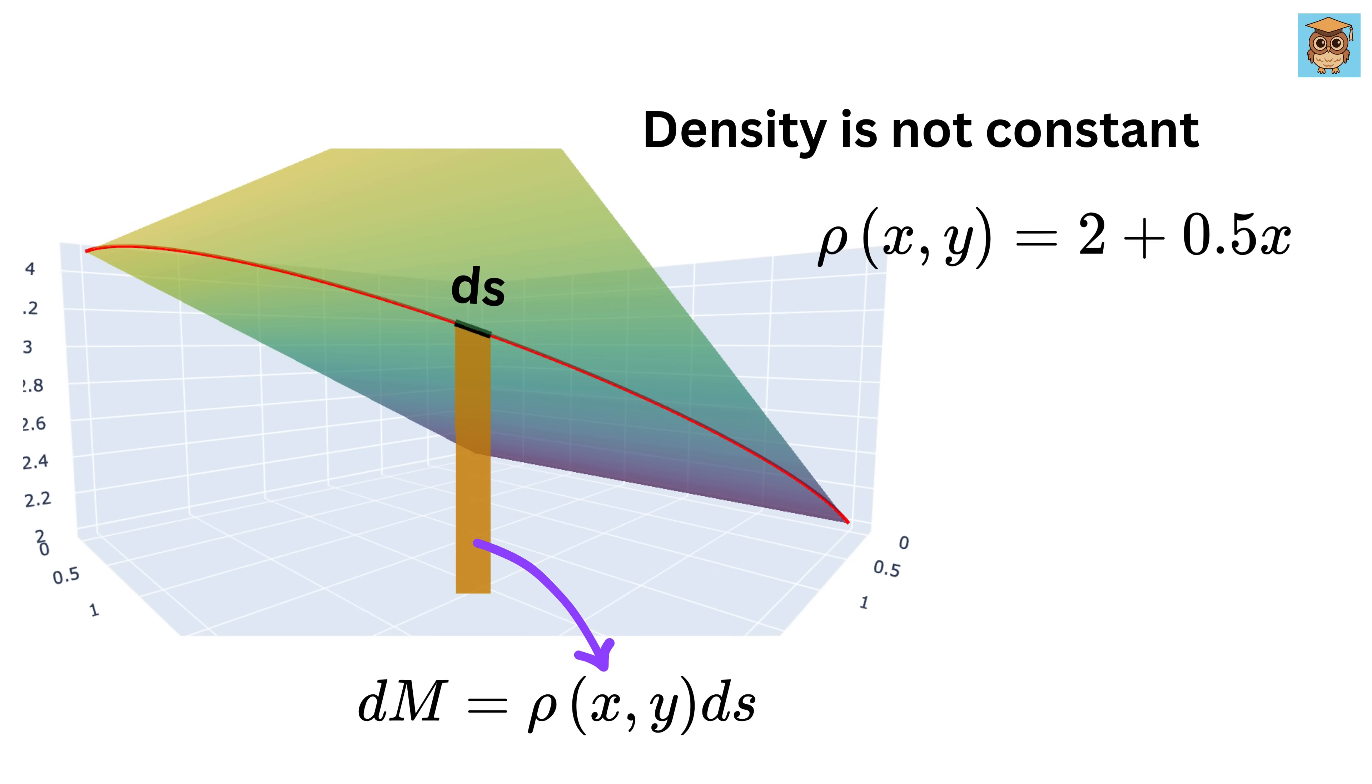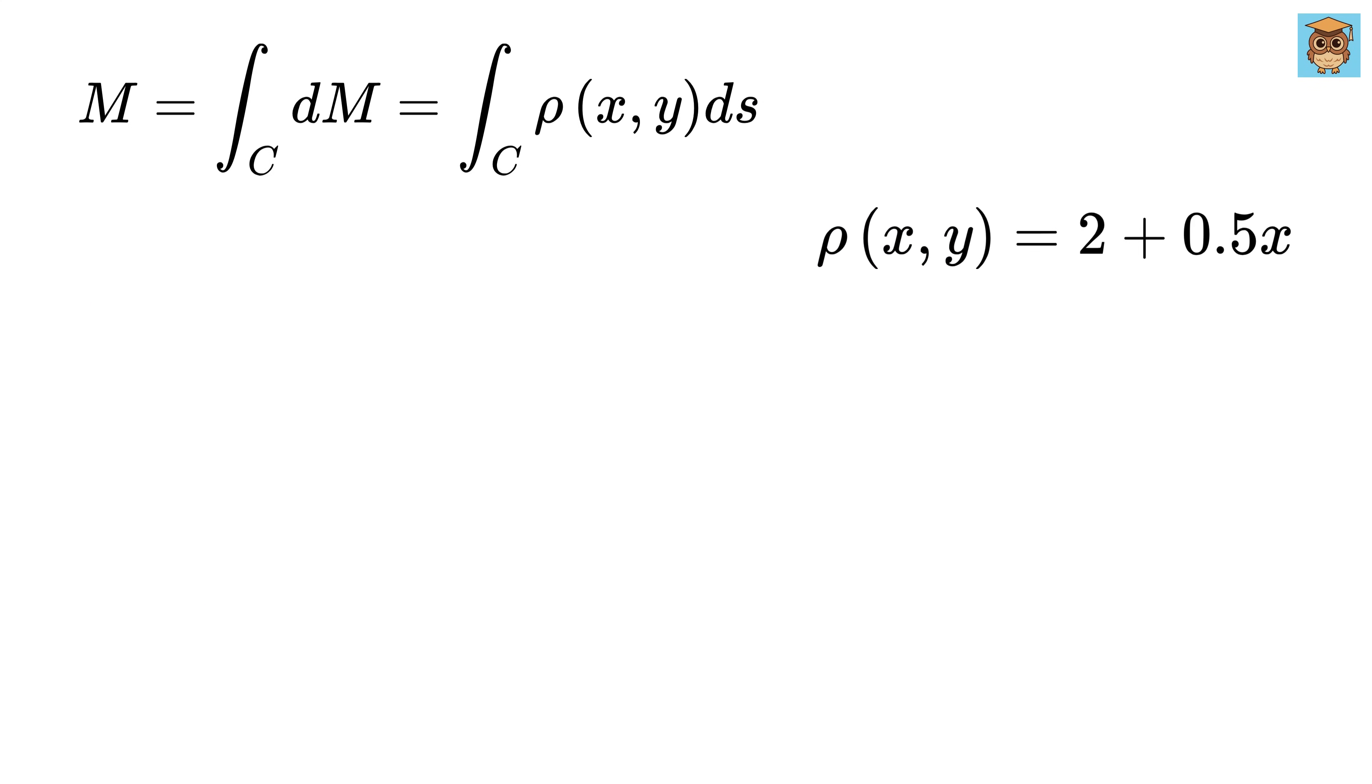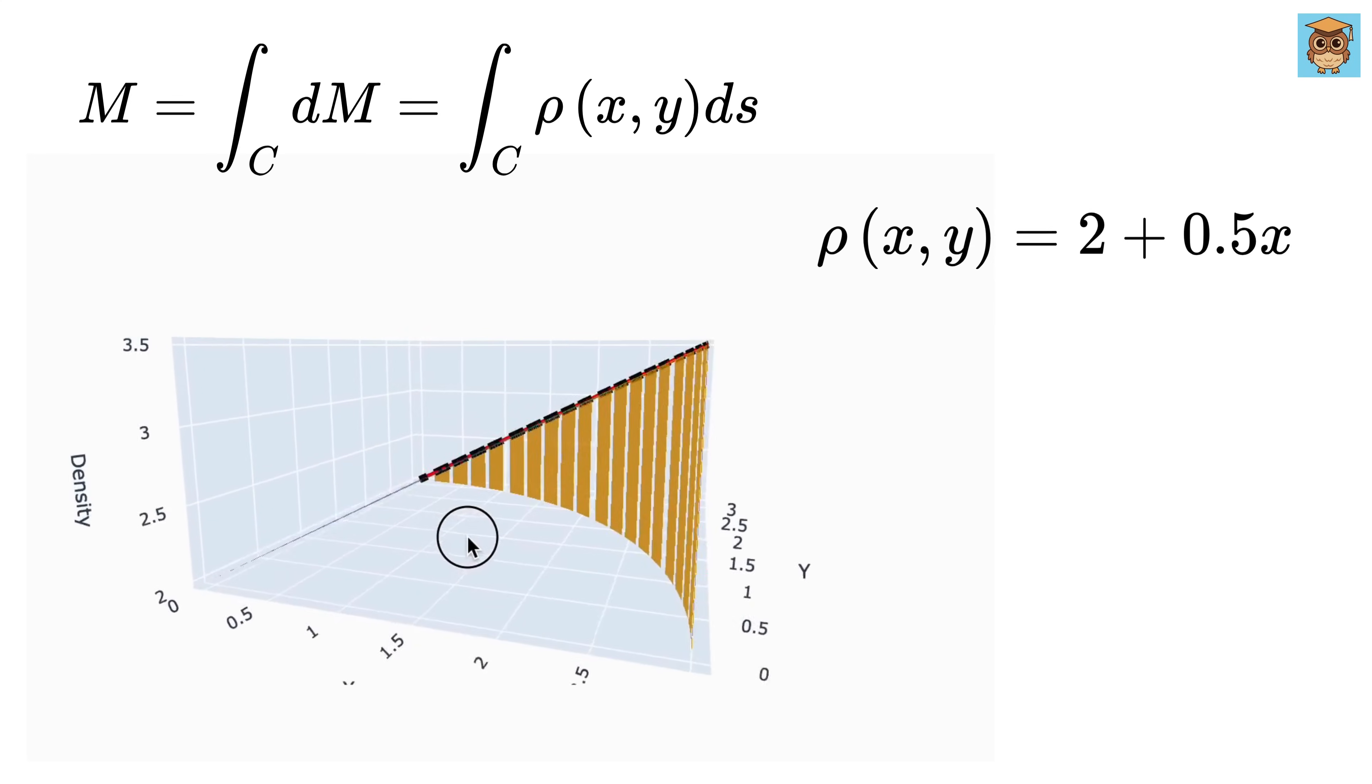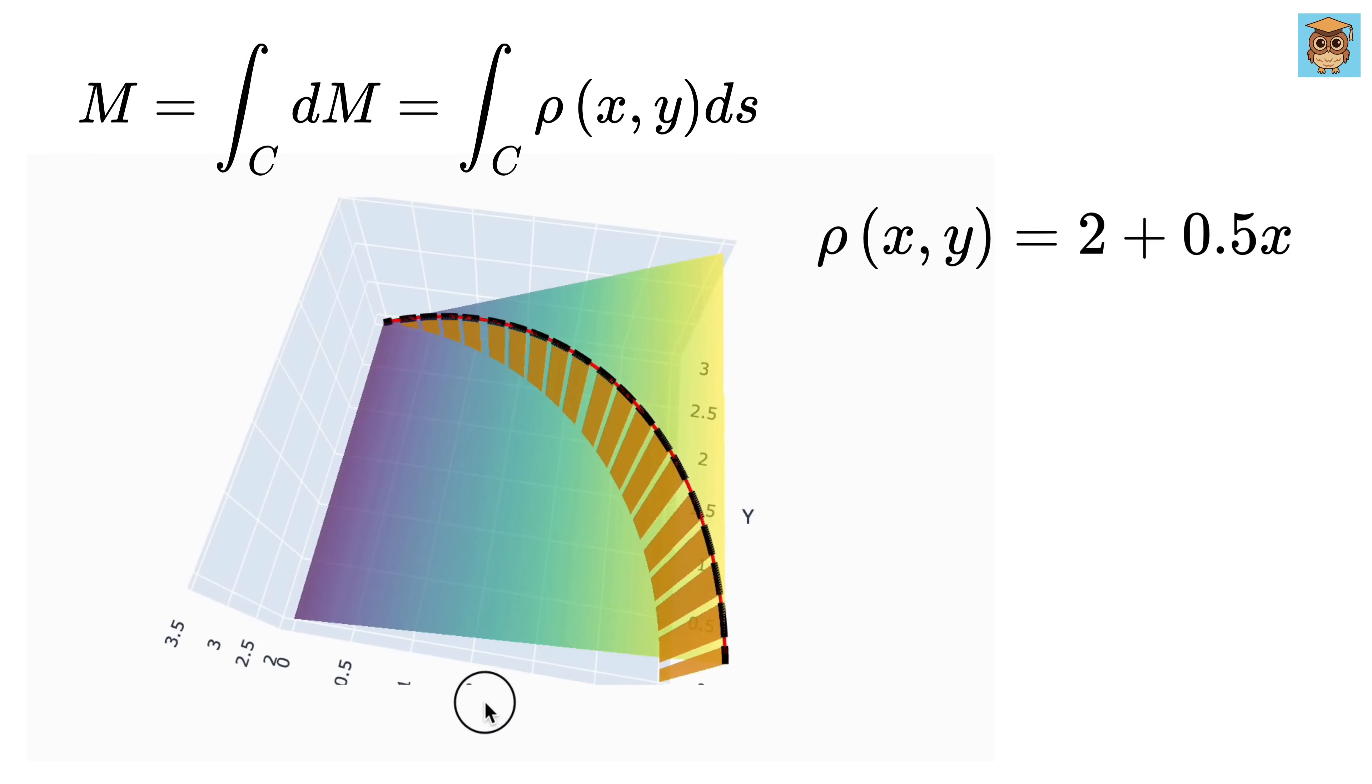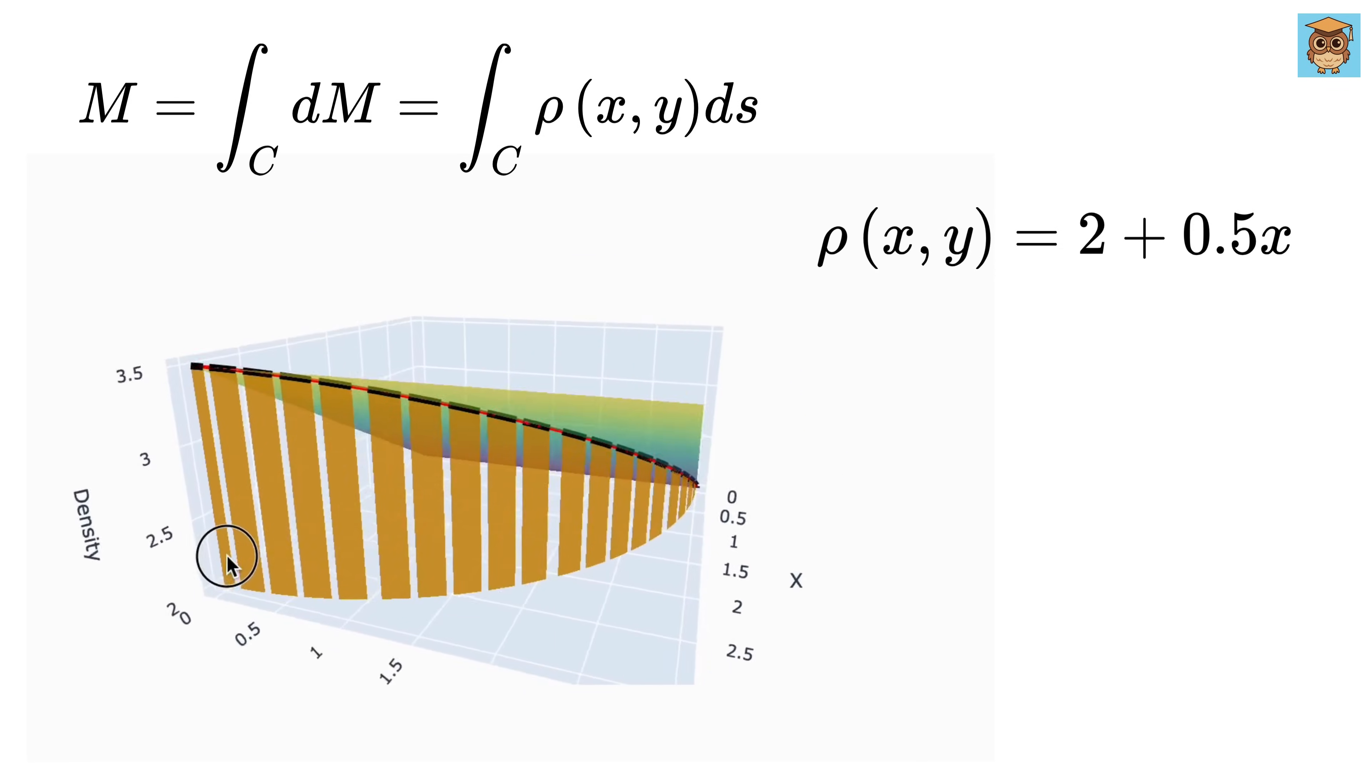Now, what's next? Well, we just do this for every tiny piece along the entire curve. This means summing up all the small mass pieces to get the total mass M as integral of this. For our linear density case, this ρ of x, y is 2 plus 0.5 times x. And that's it. That's the meaning of the line integral for mass. It's just adding up all these small mass contributions along the curved path, or the wire placed on the varying density surface. That is what line integral is all about.